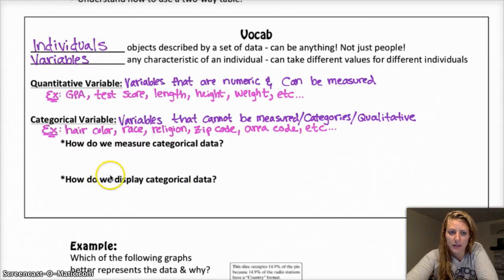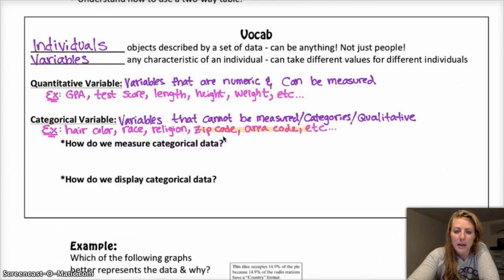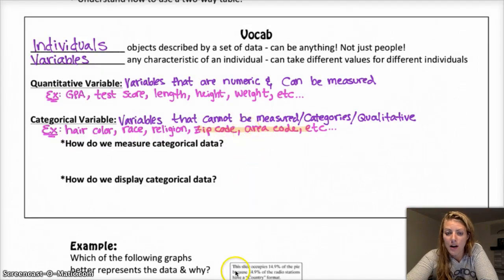And some categorical variables are race, religion, and then some that are important to mention are zip code and area code, because both of those are numbers, but you can't measure them. You can't take the mean of them or find the median zip code. It doesn't make any sense. It is, in fact, a category.